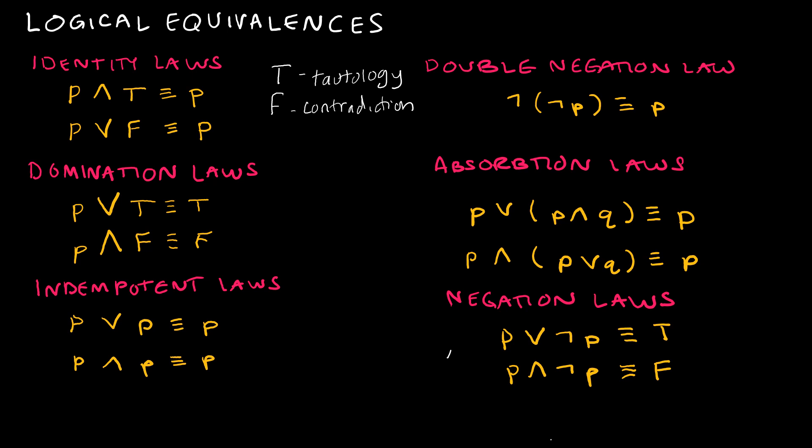So just keep that in mind as we're looking at these. So we have the identity laws that are saying if we have P and true, it's equivalent to P. If you have P or false, it's equivalent to P. Remember, this is equivalent to, we're talking about logical equivalence.